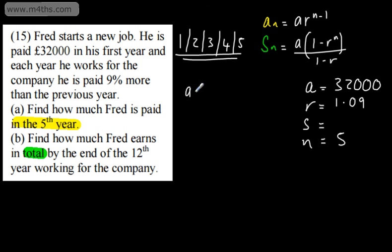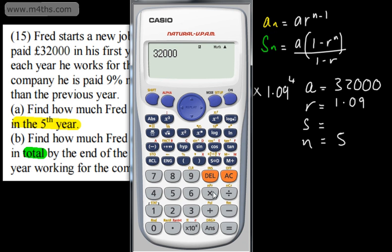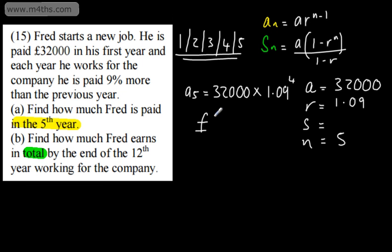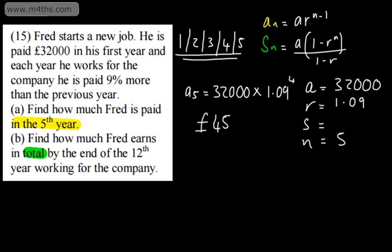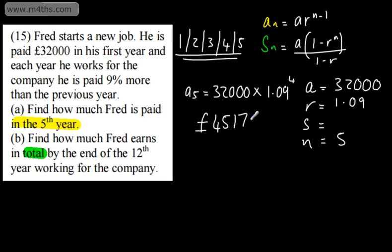All we're looking for then is A sub 5, and we saw this in one of the first videos. That's going to be 32,000, and we multiply this by 1.09 to the power of 5 minus 1, which is going to be 4. This is what he's going to get paid. So, 32,000 times by 1.09 to the power of 4. This is his salary or his wages in the fifth year. So, 45,170 pounds and 61 pence. He's getting quite a nice little pay rise each year. 9% each year. It's pretty good.